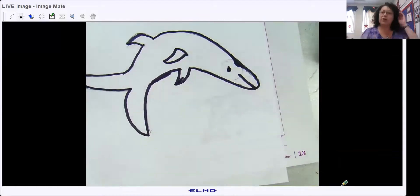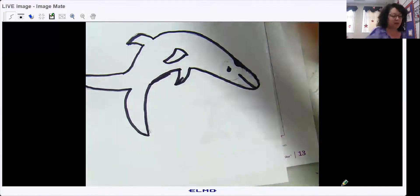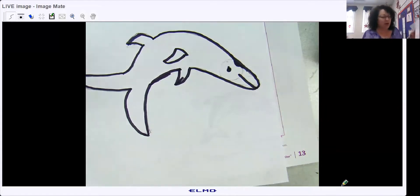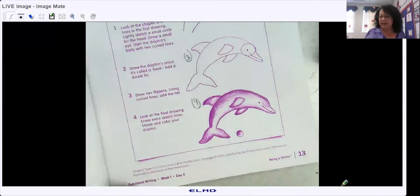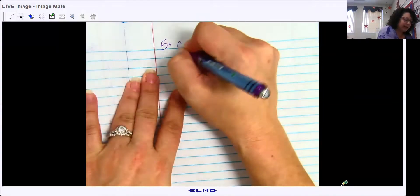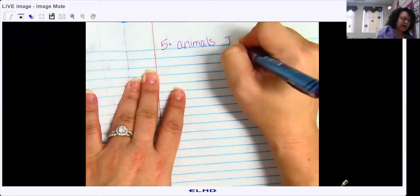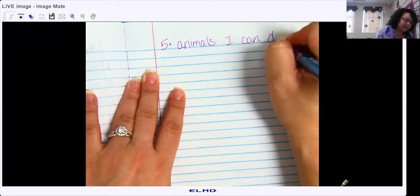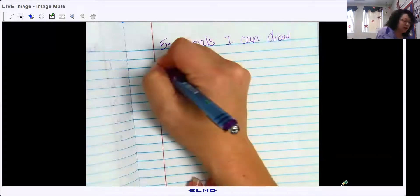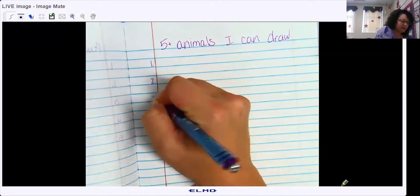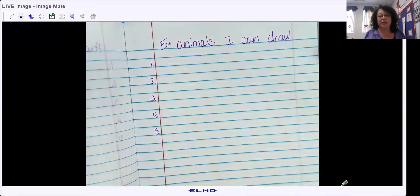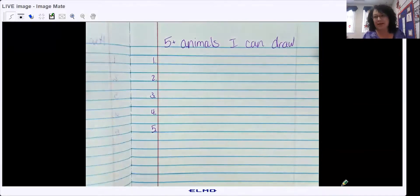Later on in the week you are going to be doing functional writing. You are going to be writing step-by-step directions. But your job today is, in your writing notebook, five or more animals I can draw. What are some animals that you can draw really well? I personally clearly cannot draw dolphins so I would not put dolphin on my list, but your dolphin might look fabulous.